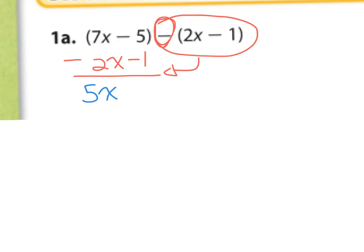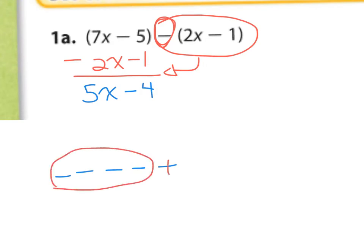And then I have 5 negatives, and I'm going to take away 1 of those negatives, so that should just bring me down to 4 negatives. Like if I drew it: 1, 2, 3, 4, 5 — there's my 5 negatives. I'm going to take away 1 of those negatives — that's what subtracting means. So if I do that, I'm taking this one away, and now I only have 4 negatives.